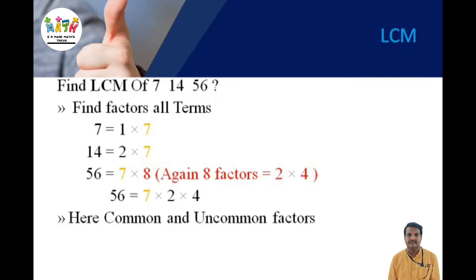Now we identify the common and uncommon factors. The common factor across all three terms is 7. The uncommon factors are 2 and 4. So the factors of 56 are 7 multiplied by 4 multiplied by 2, and therefore the LCM is equal to 56.